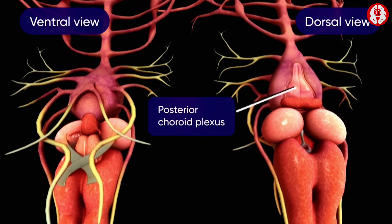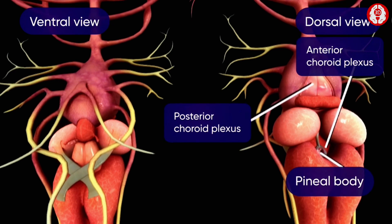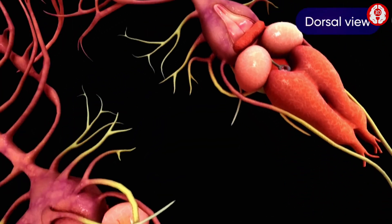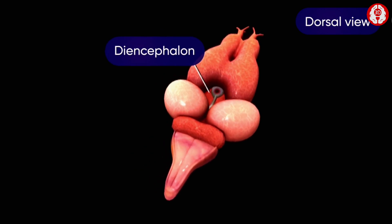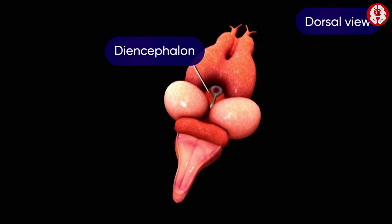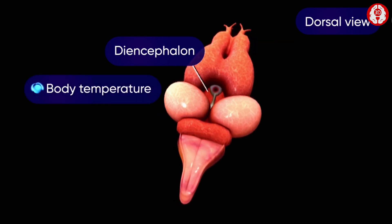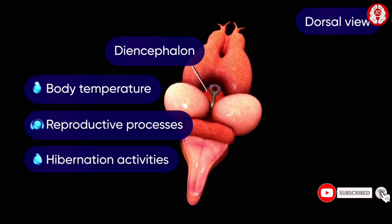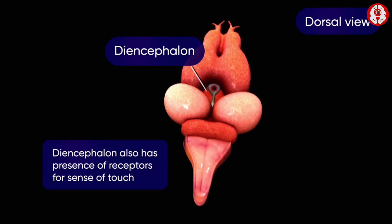Similarly, the posterior choroid plexus, anterior choroid plexus, and the pineal body are also noticeable in the dorsal view but not visible in the ventral view. The dorsal view also exhibits the diencephalon, a small part located between the cerebral hemispheres and optic lobes. The diencephalon possesses the center of the autonomic nervous system and controls body temperature, reproductive processes, and hibernation activities. It also has receptors for the sense of touch.